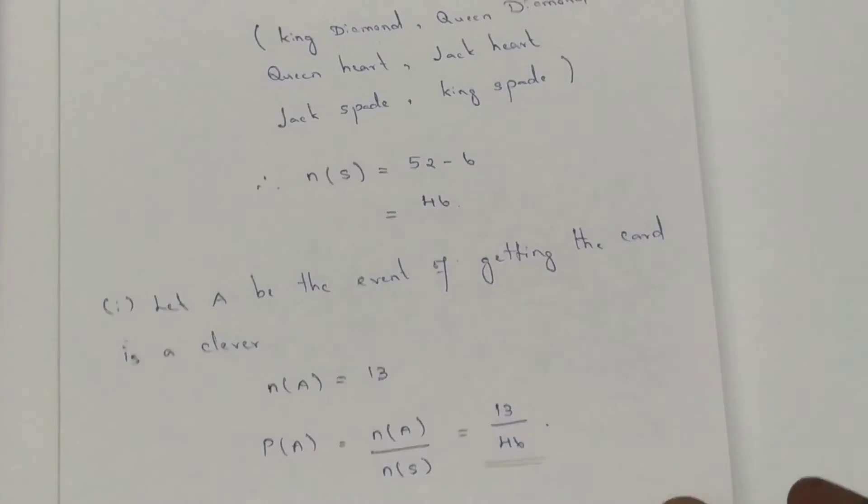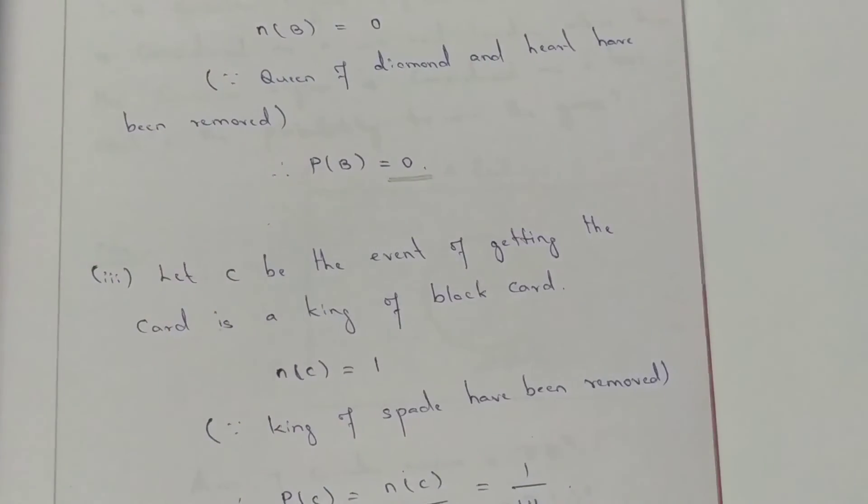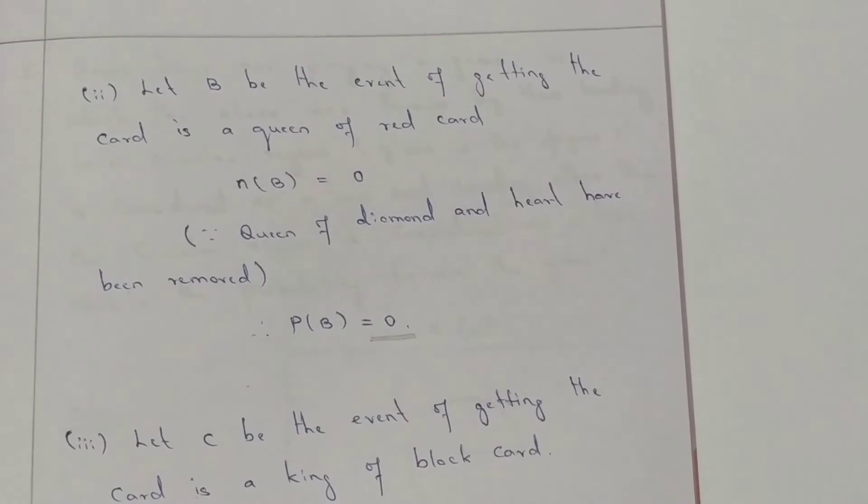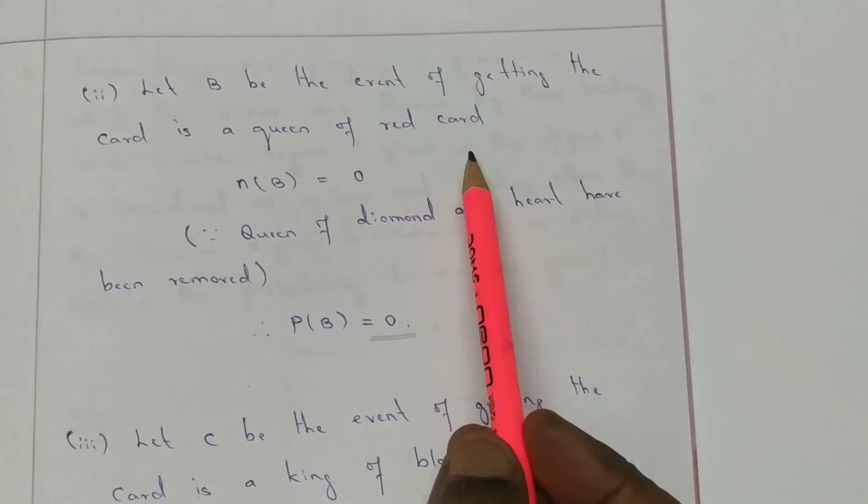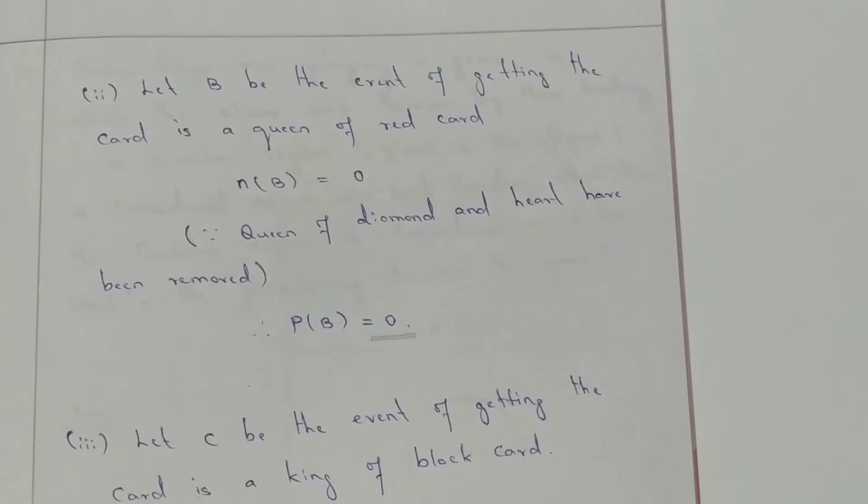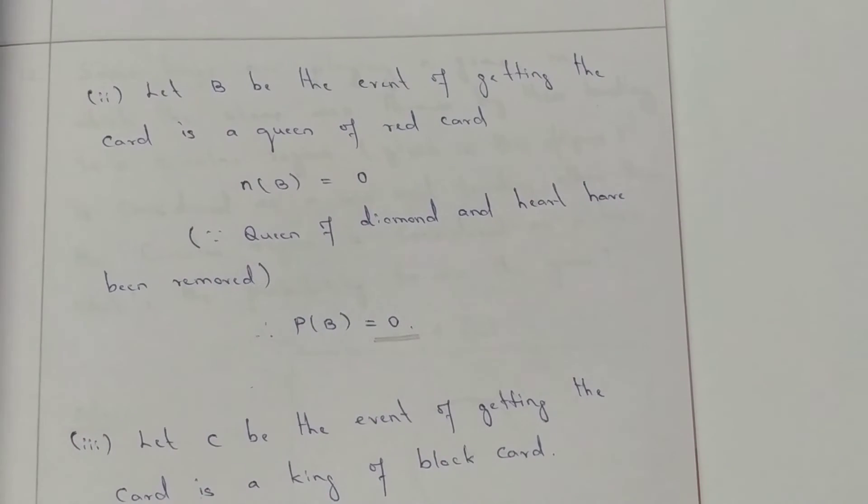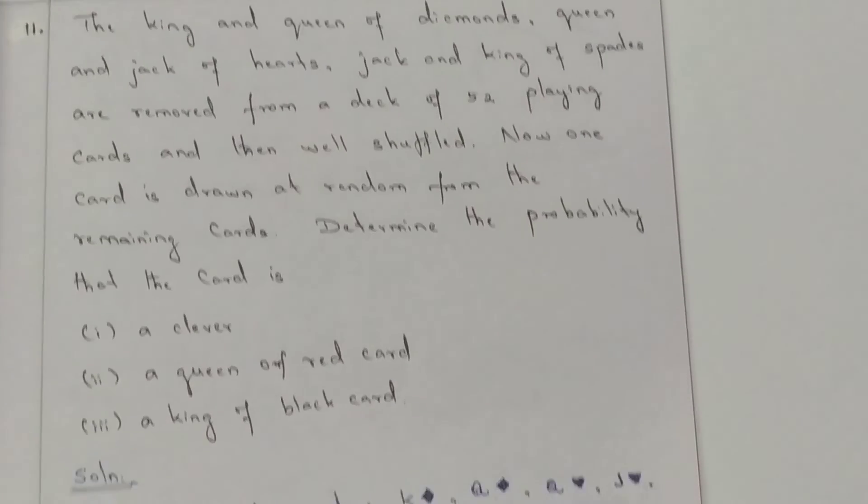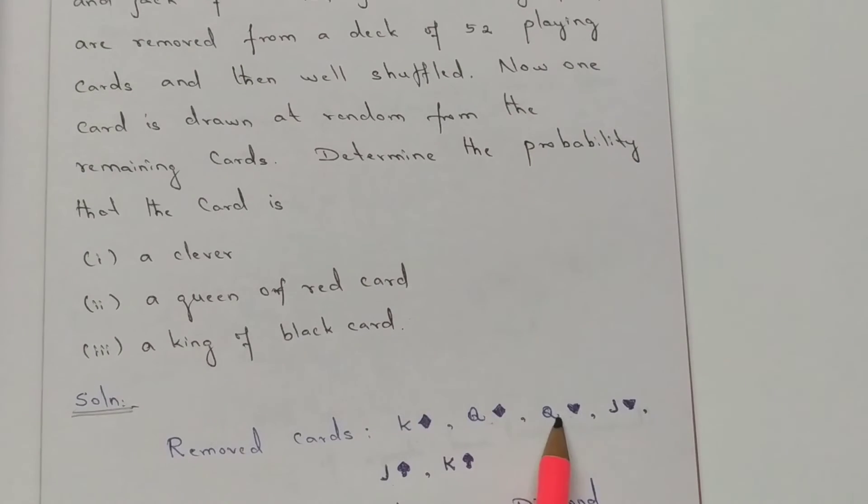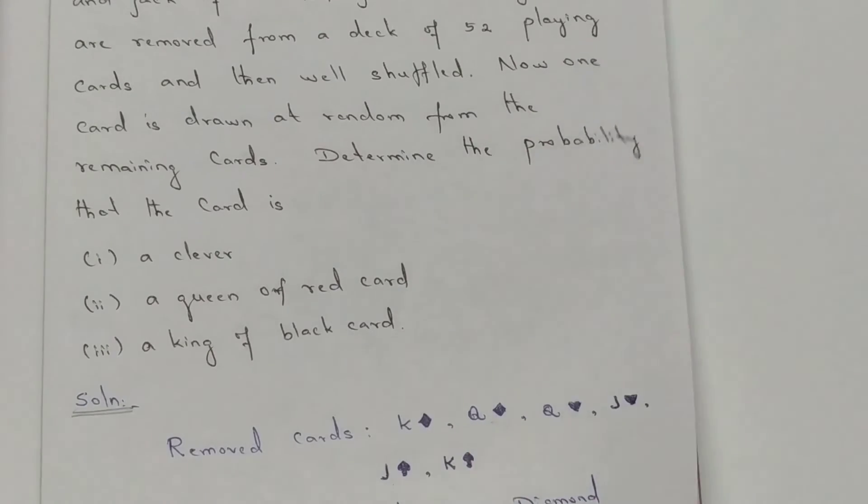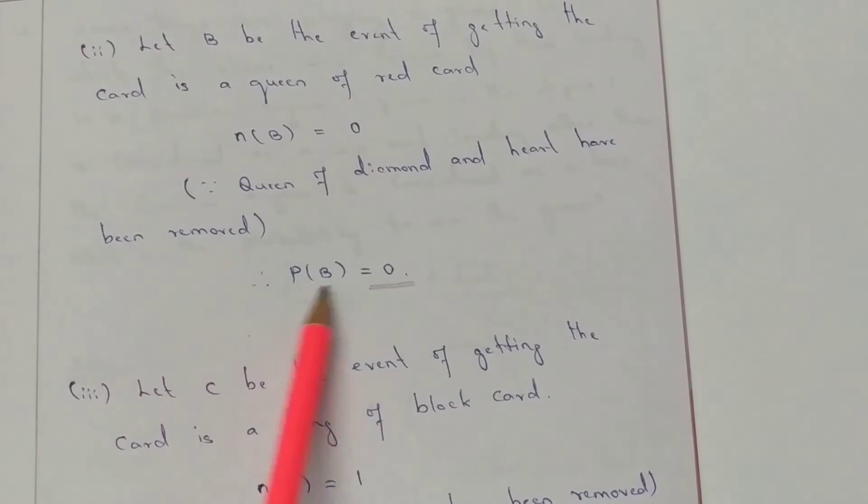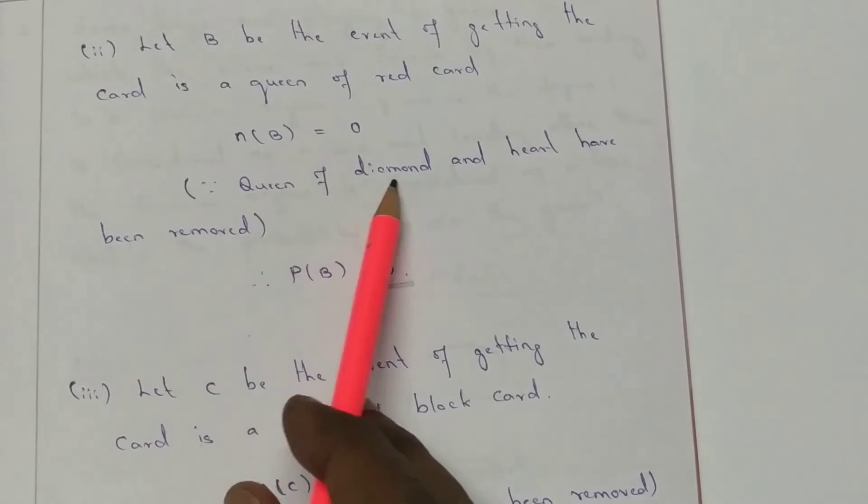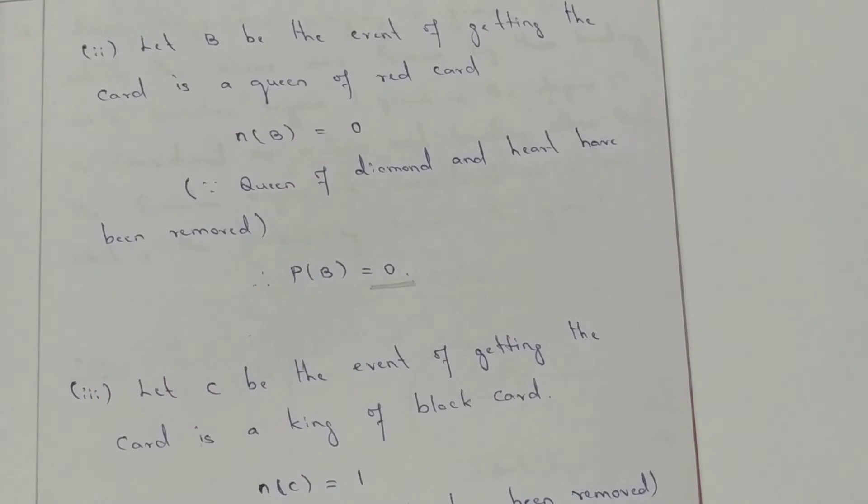Next, Queen of red card. Let B be the event of getting a Queen of red card. Red cards have 2 queens: Queen of Diamond and Queen of Heart. The Queens of red cards have been removed from the deck, so n(B) is 0. Therefore, probability of B is 0, because Queen of Diamond and Heart have been removed.